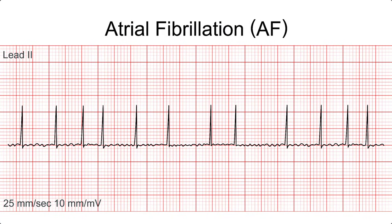Now let's talk about the most common atrial rhythm: atrial fibrillation, or AFib. This is a quivering or irregular heartbeat that causes blood to pool or coagulate at the bottom of the heart, leading to blood clots, stroke, heart failure, and other heart-related complications.